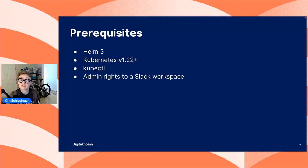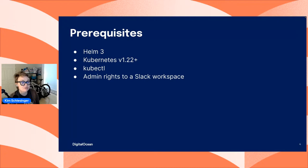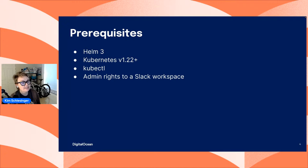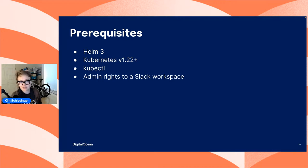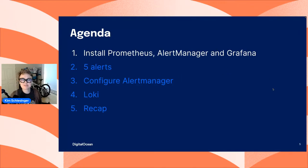Some prerequisites if you're following along: first, I have Helm 3 installed. Next, you need a Kubernetes cluster — I'm using version 1.22.8, so 1.22 or above is best practice. I also have kubectl, the command line tool to interact with my Kubernetes cluster. Finally, you'll want admin rights to a Slack workspace so you can create a channel and a custom Slack app. The good news is you can create your own Slack workspace as an individual to practice all of this.